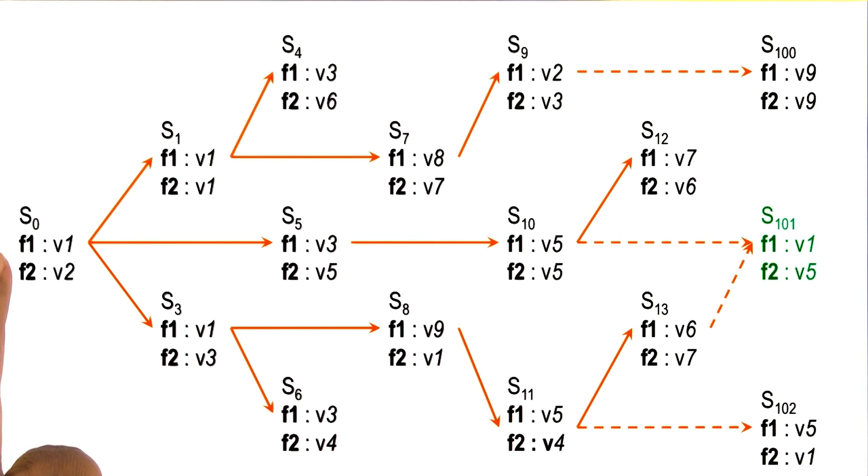Each state can be described in terms of some features, f1, f2, there could be more. Each feature can take on some values. For example, v1, there might be a range of values here.